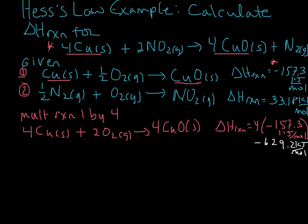Now let's turn our attention to reaction 2. Looking at this reaction, nitrogen dioxide is a reactant in our target reaction, but in the given reaction it is a product. This tells us we should flip or reverse this reaction. We could also note that nitrogen gas is also on the wrong side.